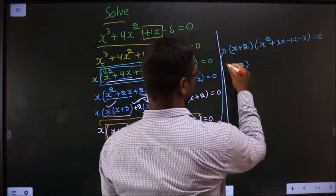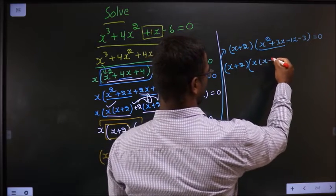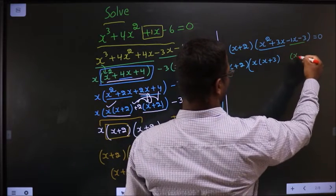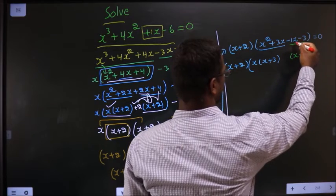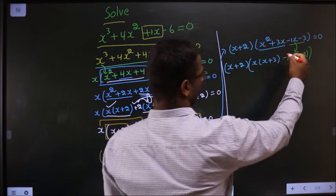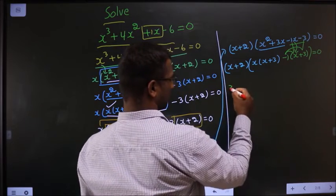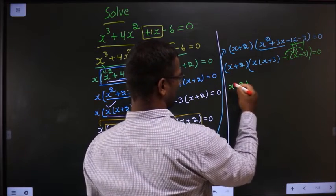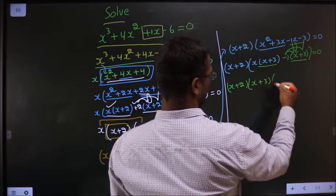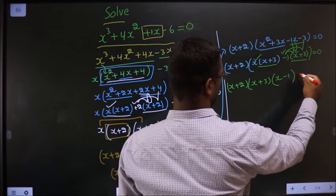From the first two terms, x plus 3x — what can I take common? x. So I get x plus 3. Here also I should get x plus 3, which means x has gone inside so outside should be minus 1. You can multiply and verify — you should get the same result. Now I take x plus 3 common, so here I am left with x and here I am left with minus 1. Equal to 0.